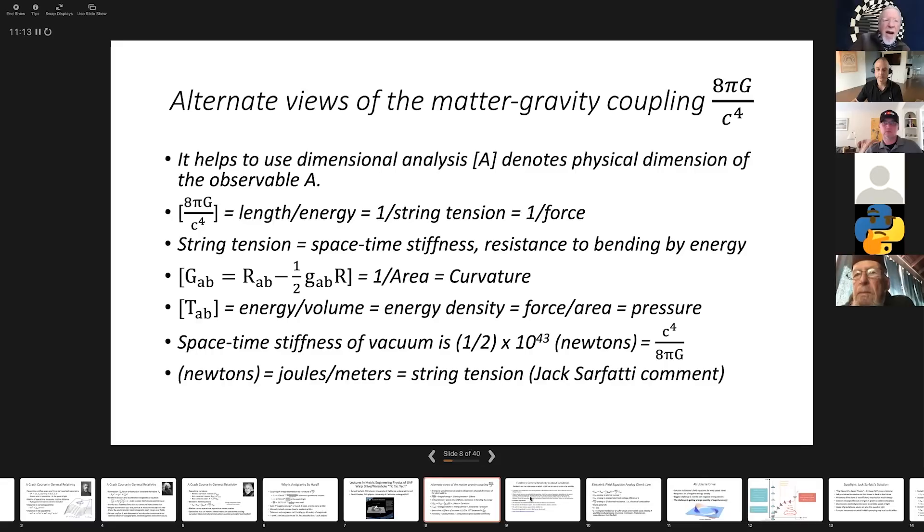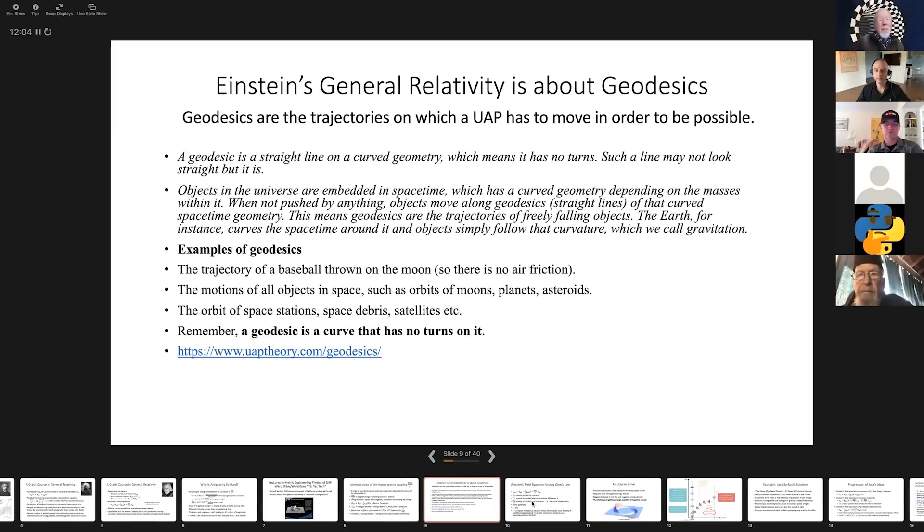If you read the standard books, even like Jim Woodward's book Making Starships, he says it takes like a Jupiter amount. You'd have to take the entire mass of the planet Jupiter and convert it into energy in order to get anything useful. That's impossible. The key thing about general relativity is what are called geodesics. The simplest geodesic in Euclidean geometry and Newtonian physics is a particle moving in a straight line in flat space-time at constant speed without any acceleration.